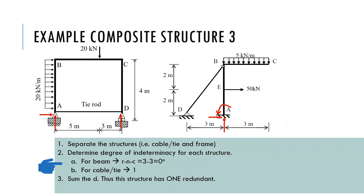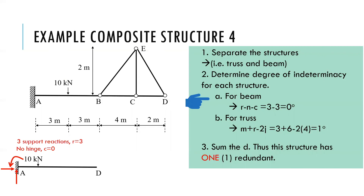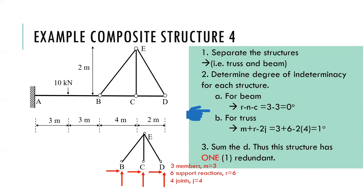Example 3 shows the frame connected to a tie rod or cable. The solution is very similar to example 2. Example 4 shows a composite structure built with a truss pinned to a cantilever beam. First, I analyze for the beam and get d equal to 0. Then, the d for the truss is equal to 1. Therefore, for this composite structure, there is 1 redundant.